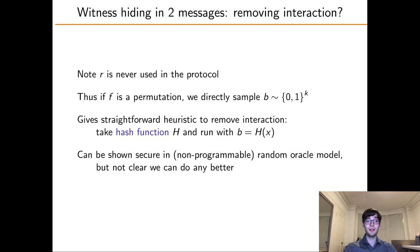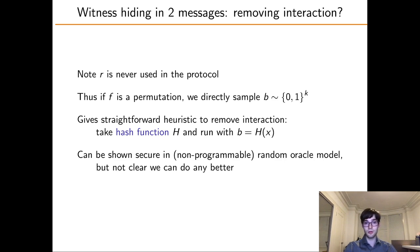I want to briefly discuss how we might try to remove the first round of the protocol. Note that if F is a permutation, then we can sample the image B directly. Thus we have a straightforward heuristic to remove interaction: simply replace B with the output of a hash function on the instance X. This can be shown secure in the random oracle model, but it is not clear if we can do any better outside of idealized models.